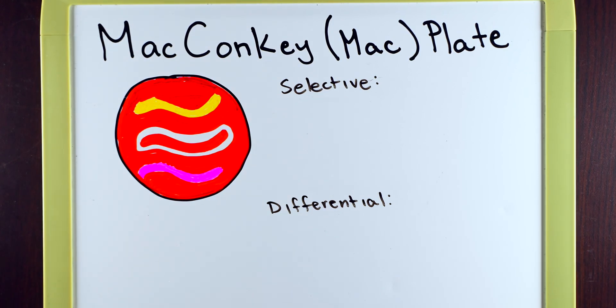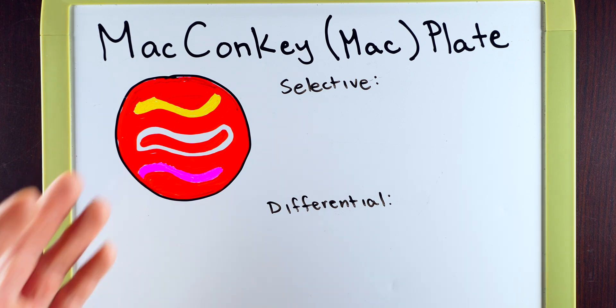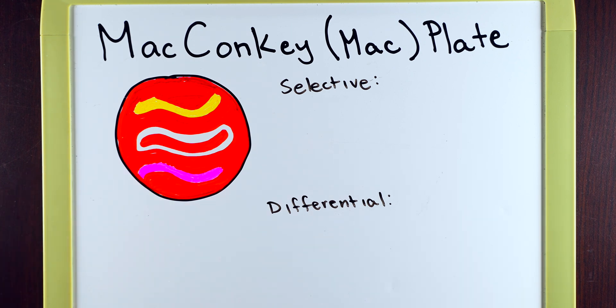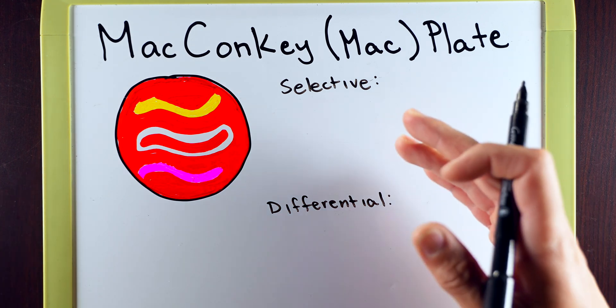And then once you've inoculated the bacteria, go ahead and label your plate, stick it in the incubator, and wait for the results. When you get it back, you're going to see something similar to this. And this is where we're going to go back to looking at what it means to be selective and differential.